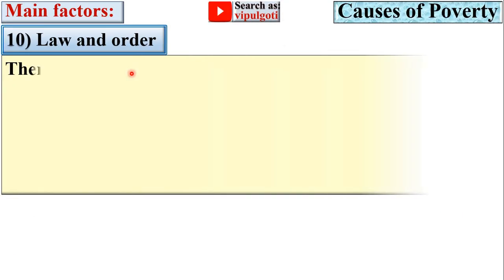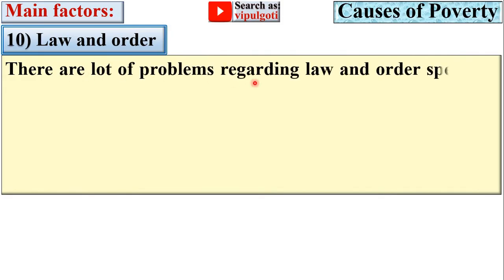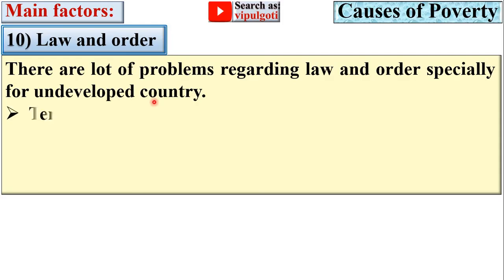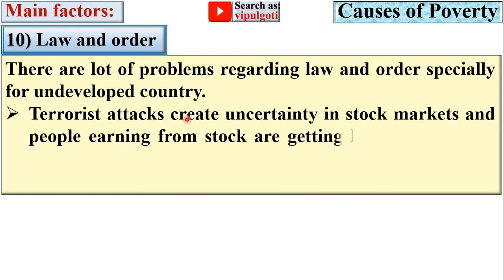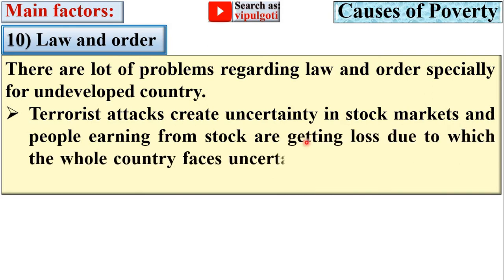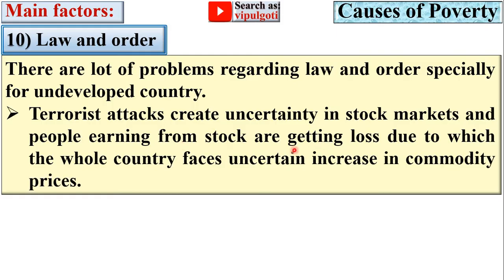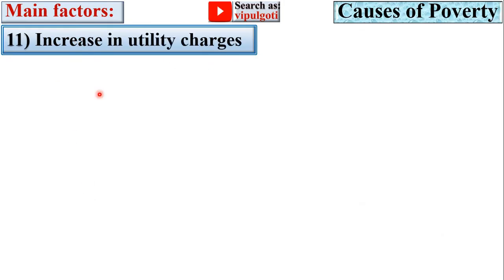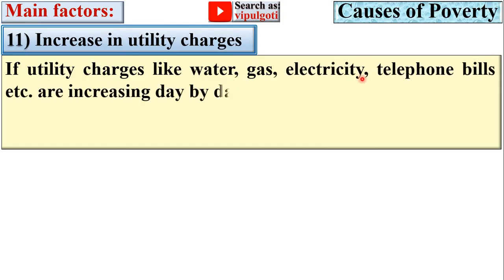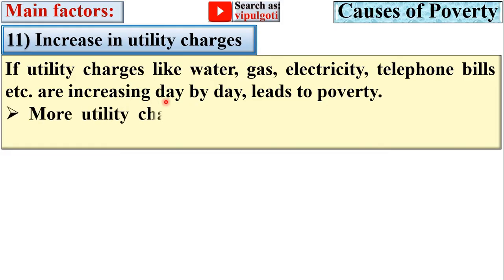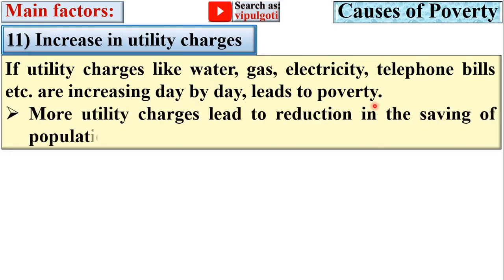Next, law and order. There are a lot of problems regarding law and order, especially for underdeveloped countries. Terrorist attacks create uncertainty in stock markets, and people earning from stocks suffer losses, due to which the whole country faces uncertain increases in commodity prices. Next, increase in utility charges. If utility charges like water, gas, electricity, telephone bills, etc. are increasing day by day, it leads to poverty, as more utility charges lead to a reduction in the savings of the population.